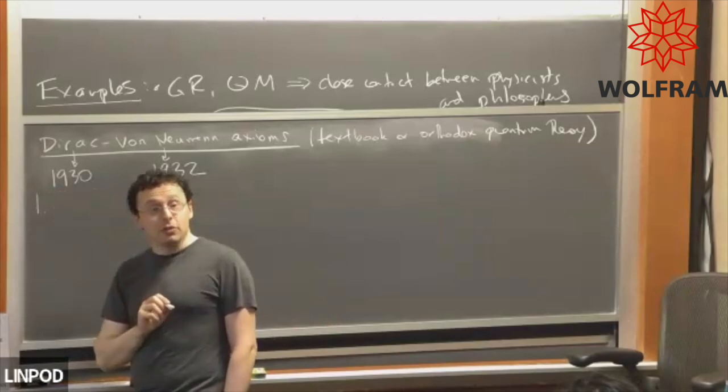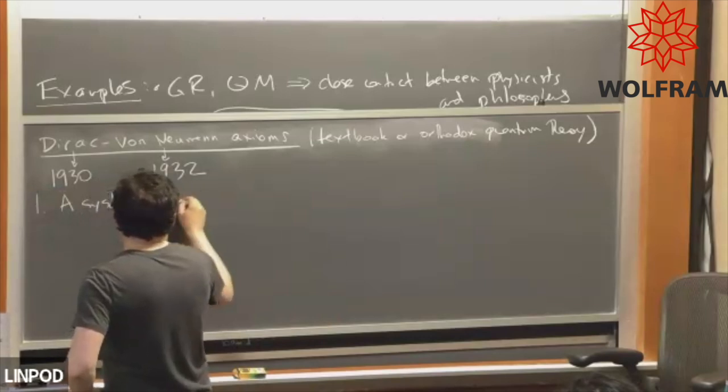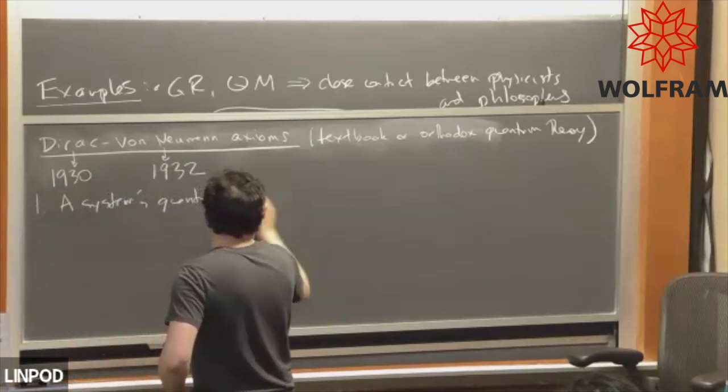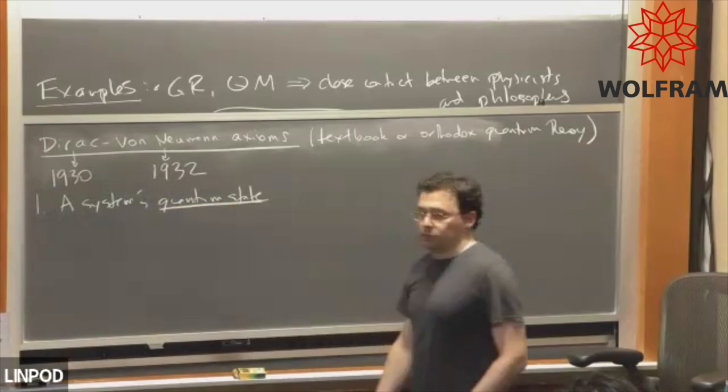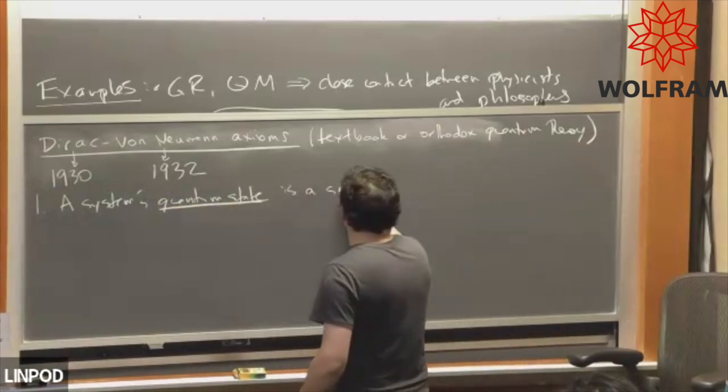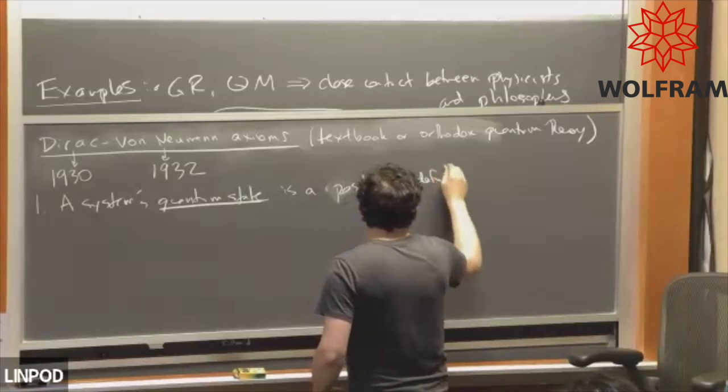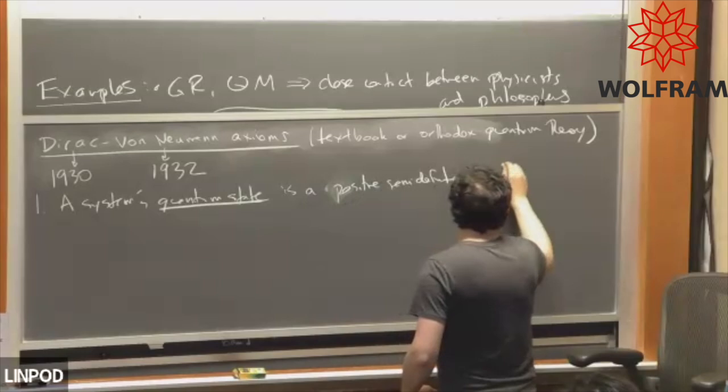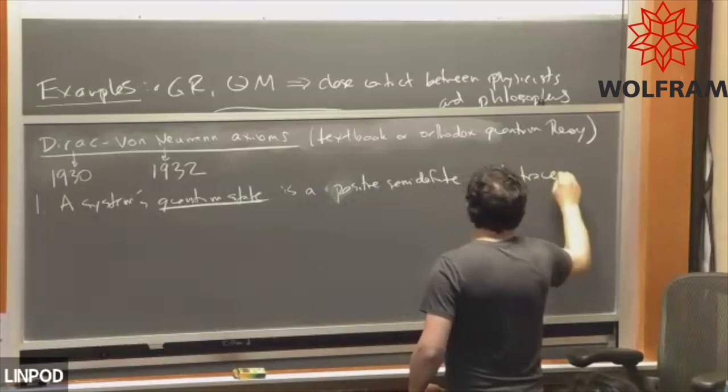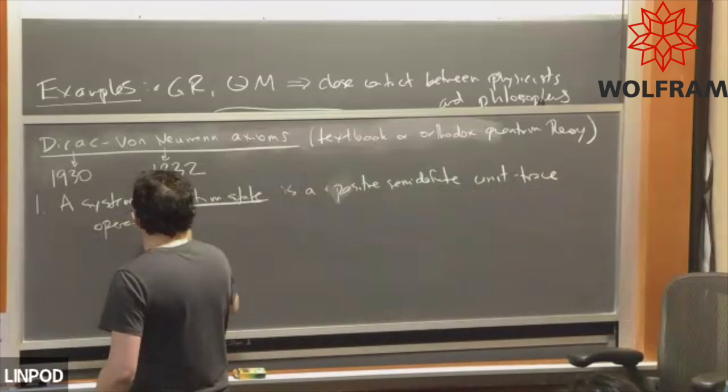Axiom one is about things called quantum states. A system's quantum state is a positive semi-definite unit trace, which means it's a trace class operator or matrix.